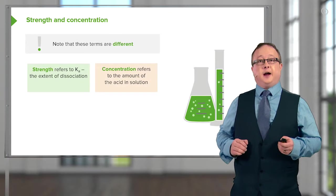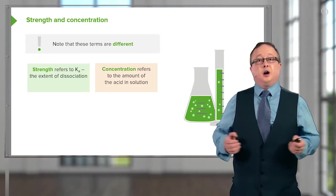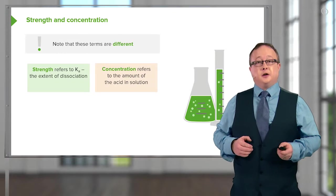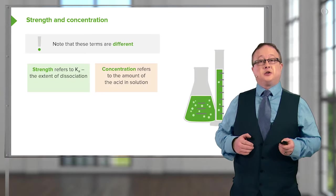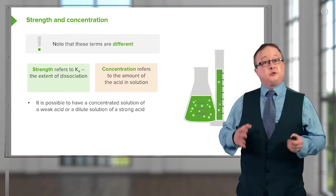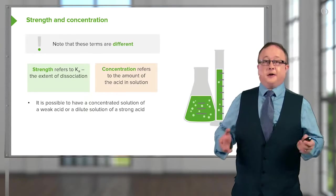Concentration, on the other hand, relates purely to the amount per liter of a given ion. Strength refers to Ka and concentration refers to the amount of acid actually in solution. Therefore, it's possible to have a concentrated solution of a weak acid or a dilute solution of a very strong acid.